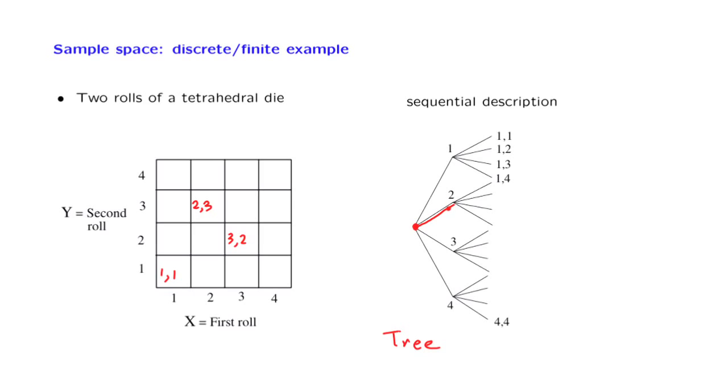So maybe we get a 2 in the first roll. And then we take note of what happened in the second roll. And maybe the result was a 3. So we follow this branch here, and we end up at this particular leaf, which is the leaf associated with the outcome 2, 3.